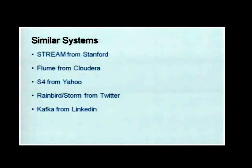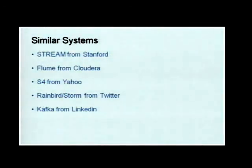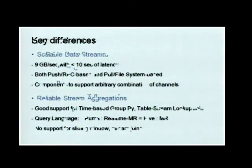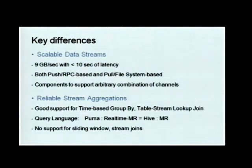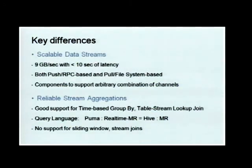There are a lot of similar systems in the industry. The key features of Data Freeway compared to other systems are scalable data streams and support for both push and RPC. For Puma, the key advantages are very good support for time-based aggregations and the SQL-like query language, which is missing from a lot of other components in the industry.